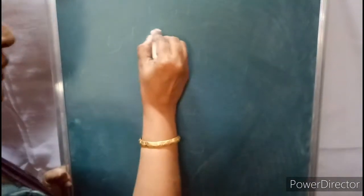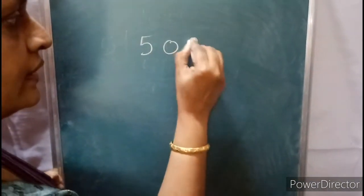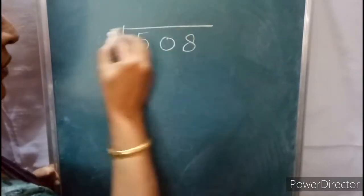Now consider three-digit numbers with remainders. 508 divided by 5.